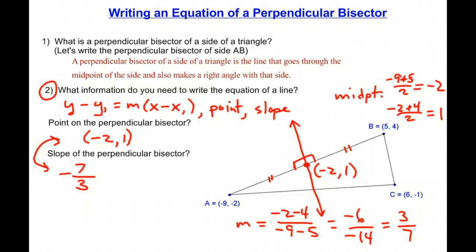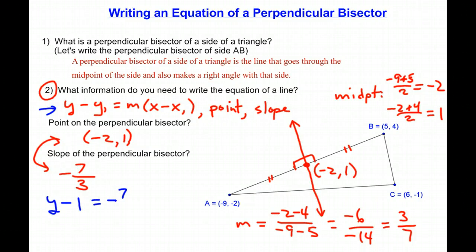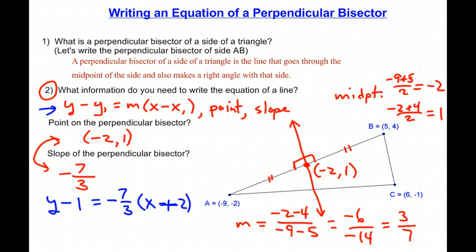Using the point-slope formula: y minus 1 equals negative 7 thirds times x minus negative 2. Whenever you see those two negatives together, it's a good idea to clean that up to a positive sign. So what you have right here is the equation of the perpendicular bisector of side AB.